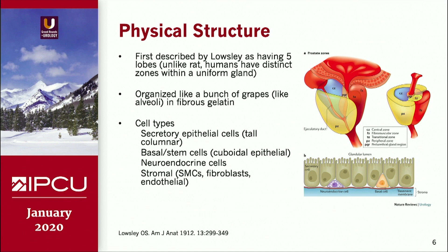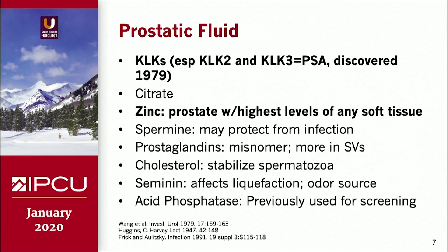The stroma is a mixture of smooth muscle cells, fibroblasts, and endothelial cells. In terms of the fluid produced by the prostate, we have kallikreins — a term that became much better known after the 4K score, with PSA being kallikrein 3. These are enzymes; PSA is a serine protease. The prostate is rich in citrate and zinc — it actually has the highest zinc level of any soft tissue — and this gets a lot of press for fertility supplements, though the evidence in humans is limited.